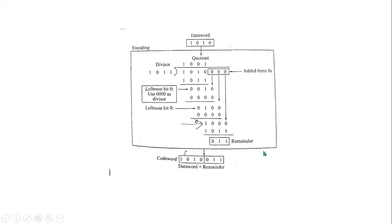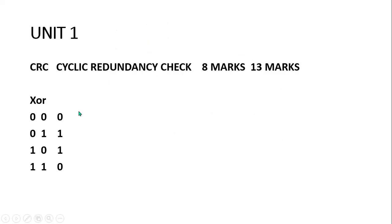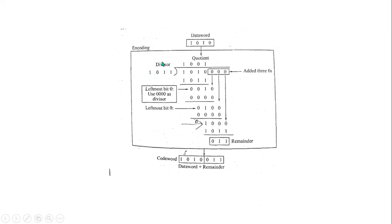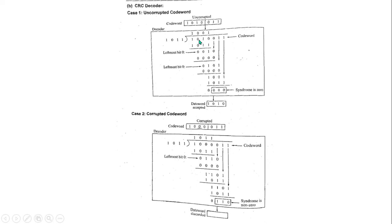Now this is the CRC decoder problem. In the decoder, the XOR gate is used the same way. The decoder has two types: uncorrupted code word and corrupted code words. The uncorrupted type uses the same divisor and data words.